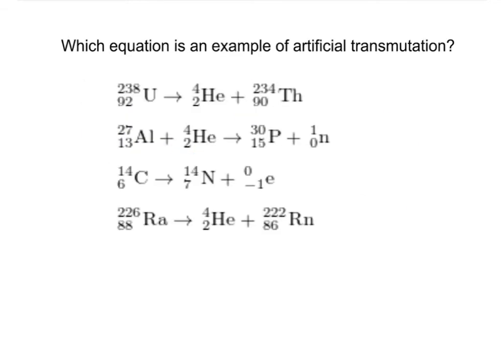Which equation is an example of artificial transmutation? Three of the four reactions have only one reactant to the left of the arrow — meaning carbon-14, radium-226, and uranium-238 are unstable and transmute on their own. However, reaction number two shows aluminum-27 being attacked by an alpha particle, meaning we are artificially inducing the stable aluminum-27 to transmute into phosphorus-30.